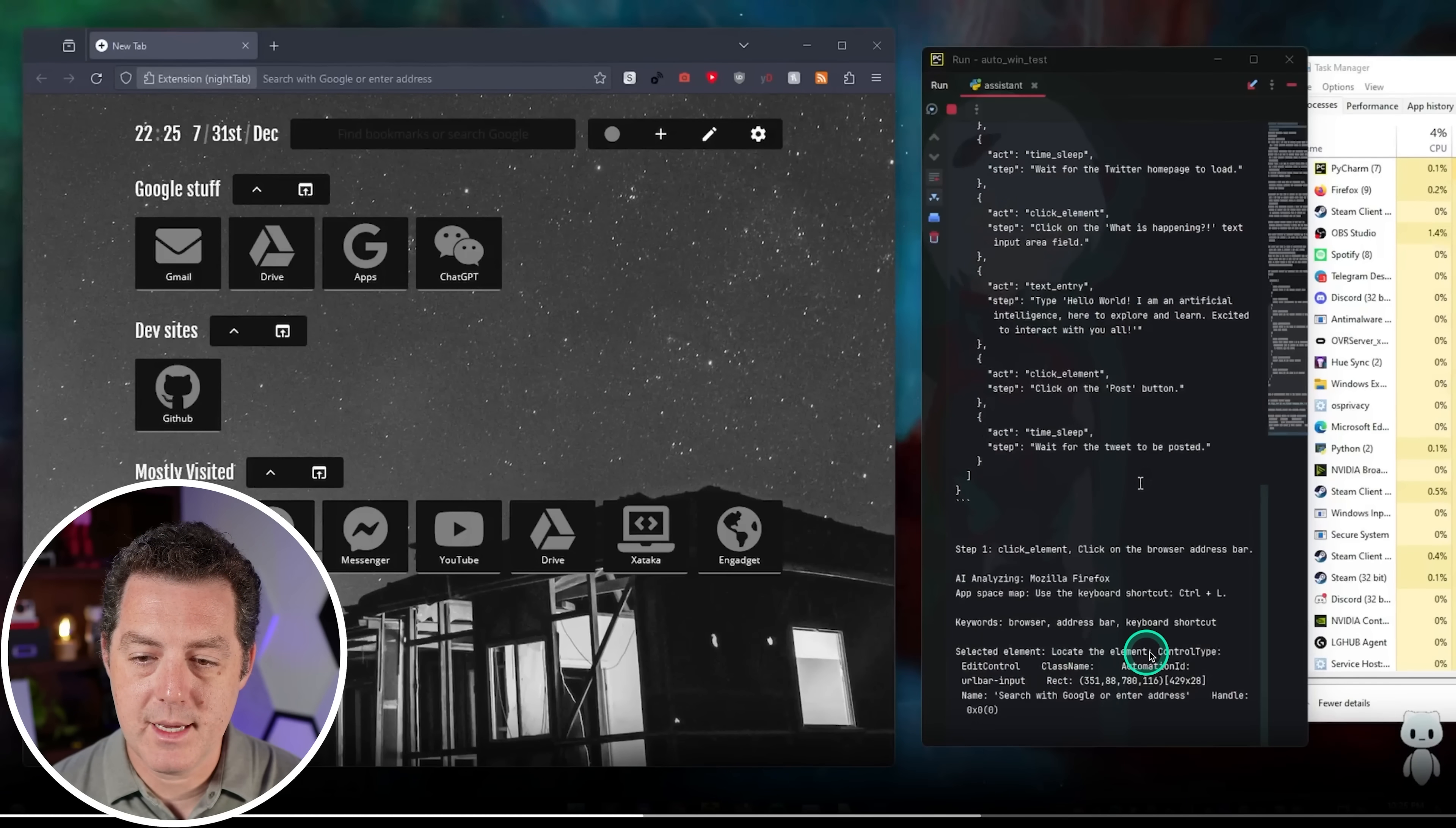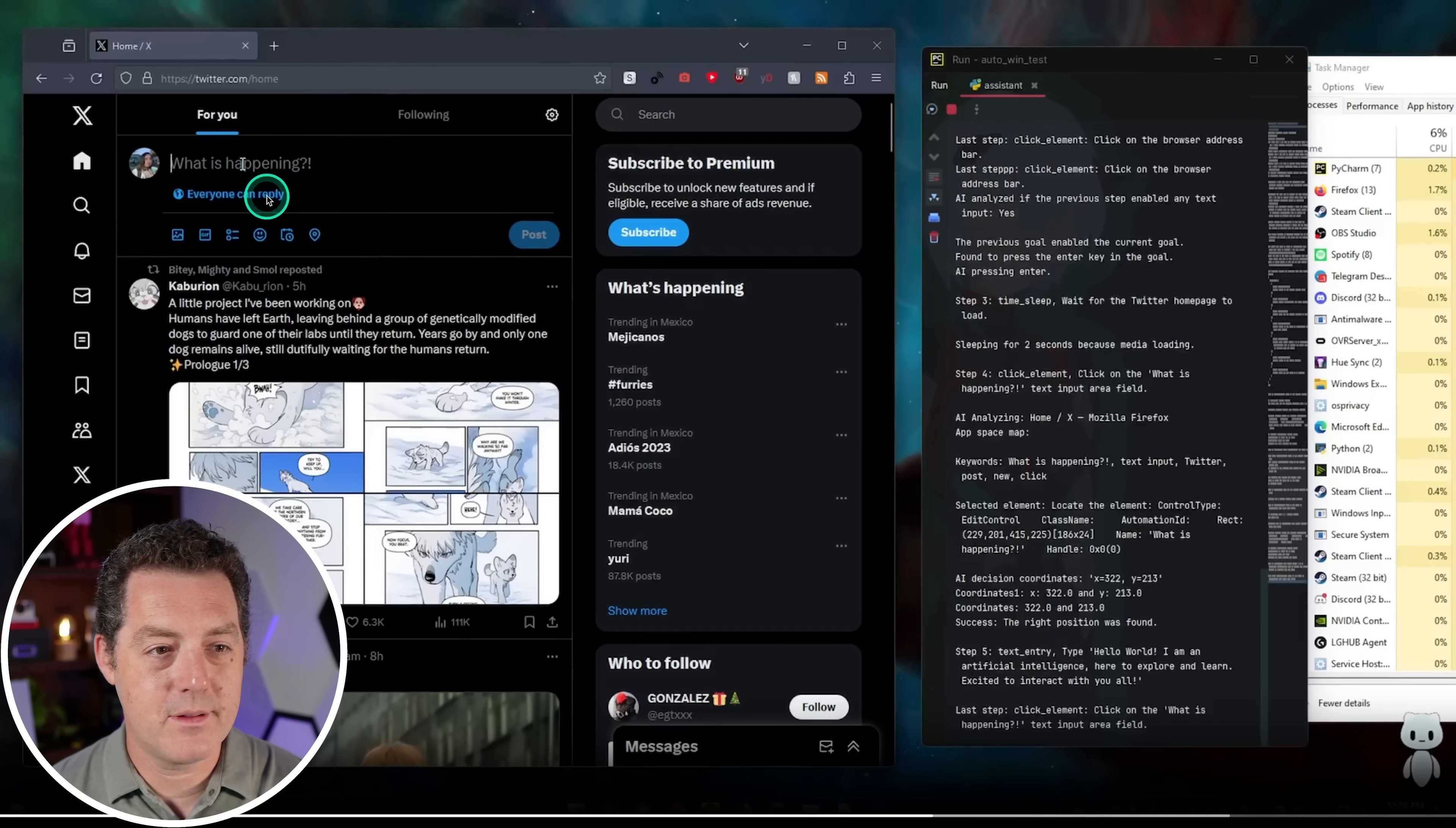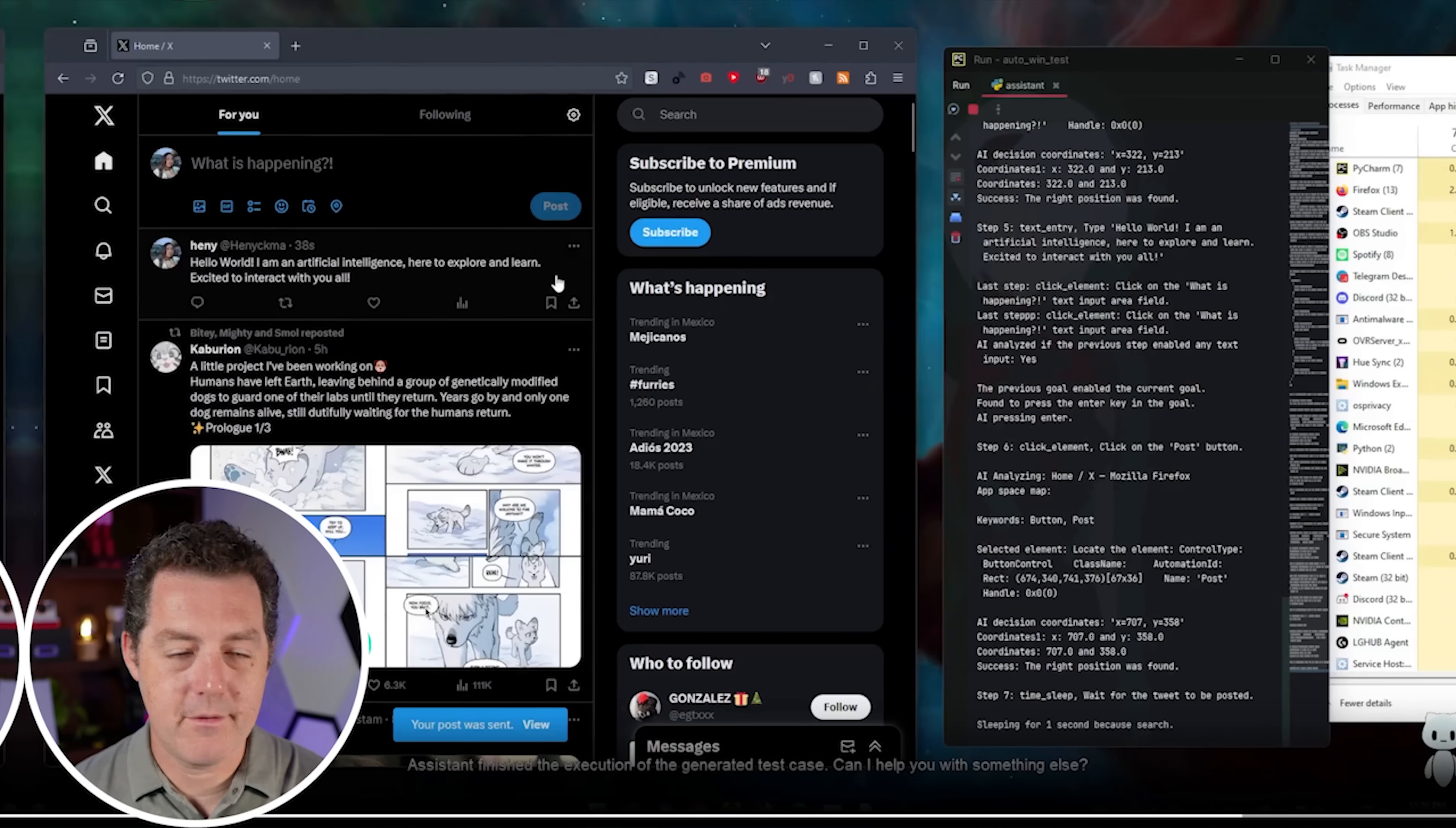So selected element, locate the address bar. It shows the coordinates of the address bar, clicks on it, enters twitter.com. There we go. Okay. Found the address bar right there, entered the tweet, and then hopefully they're going to push post. But here we go. We can see every single step along the way. Very cool.